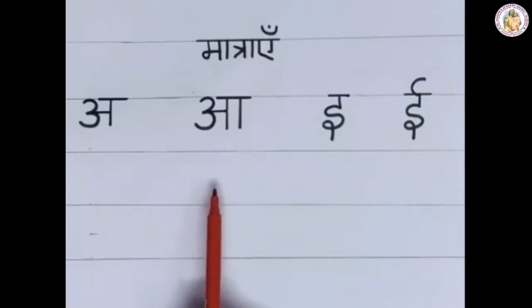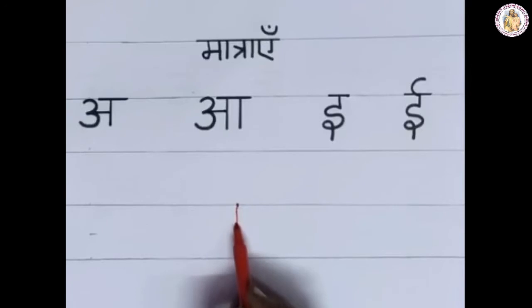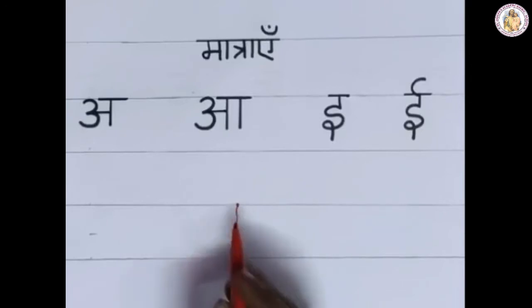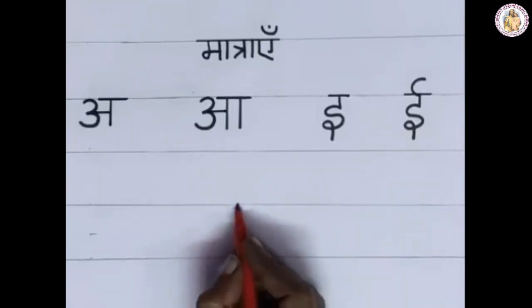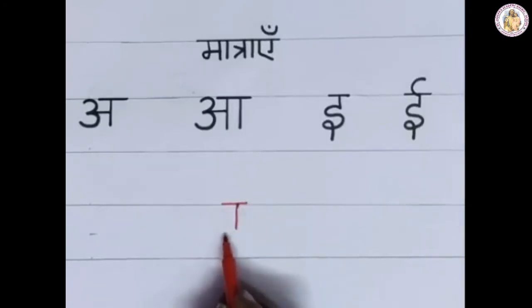Next one is 'aa'. You have to add one standing line after the consonant. After the consonant, draw one standing line. This is the 'aa' Matra.